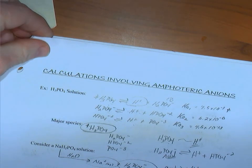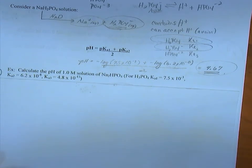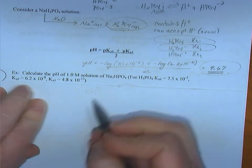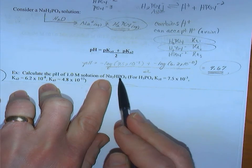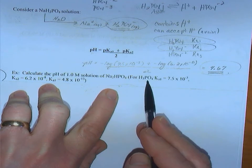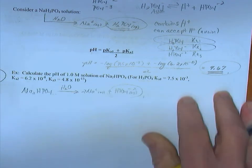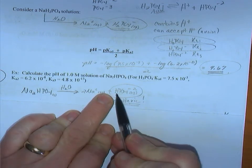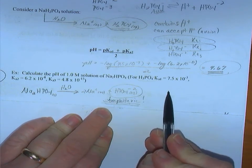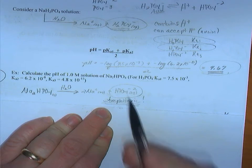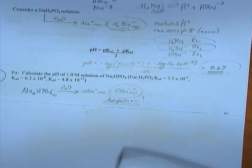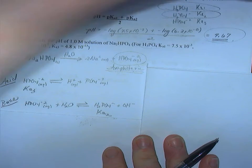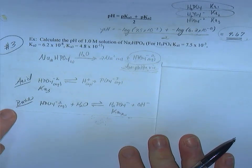Turning back to the first page example: sodium HPO4²⁻ (Na2HPO4). The original acid is triprotic. This dissociates to give two sodium ions and one HPO4²⁻. Is it amphoteric? Yes — it contains hydrogen, so it can release the hydrogen ion, and being an anion it can also accept the hydrogen ion. Here is the reaction of HPO4²⁻ behaving as an acid and here is the reaction of it behaving as a base.